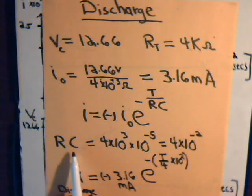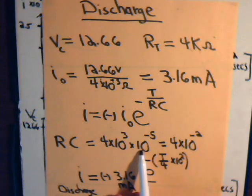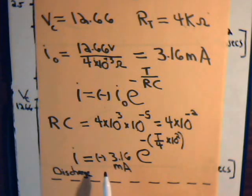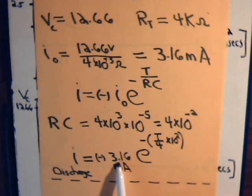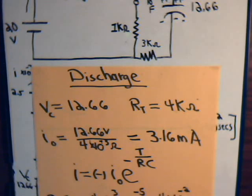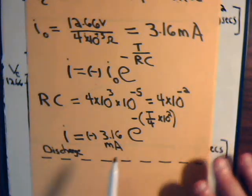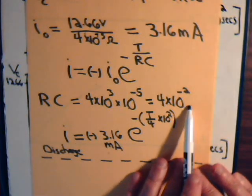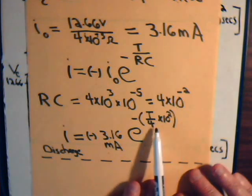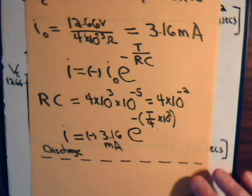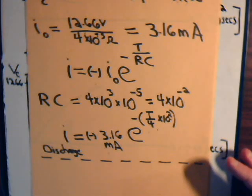The RC for the discharge circuit is now 4,000 ohms times 10 to the minus 5, giving 4 times 10 to the minus 2. The general equation for the discharge current is: i equals minus 3.16 milliamps times e to the minus t over 4 times 10 to the minus 2. The negative sign indicates the current is flowing in the opposite direction to the charging current.